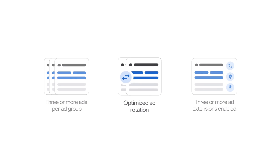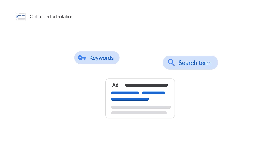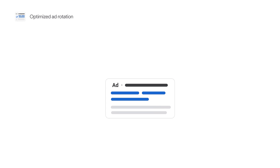The second step is to optimize your ad rotation. This setting optimizes your ads for each individual auction by using signals like keyword, search term, device, and location. The optimize setting shows ads that are expected to perform better, more often, than other ads within an ad group.